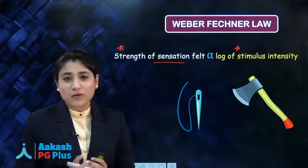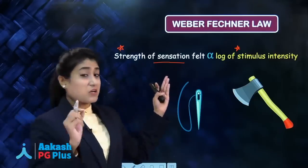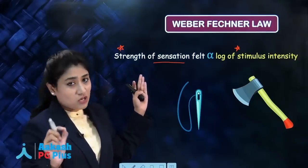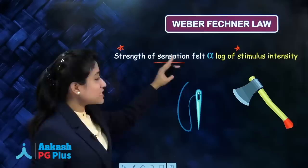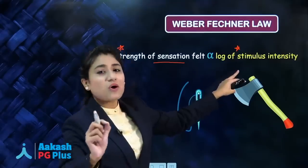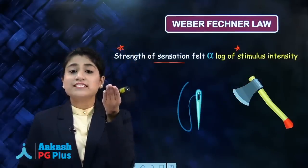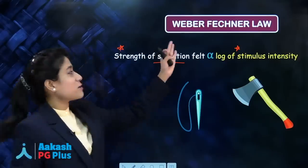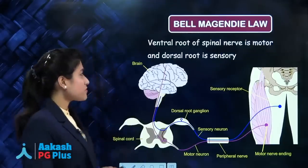then the strength of sensation felt is increasing. This is nothing but Weber-Fechner law, which says that strength of sensation felt is directly proportional to log of stimulus intensity. As intensity of stimulus increases, strength of sensation felt also increases. This is Weber-Fechner law.